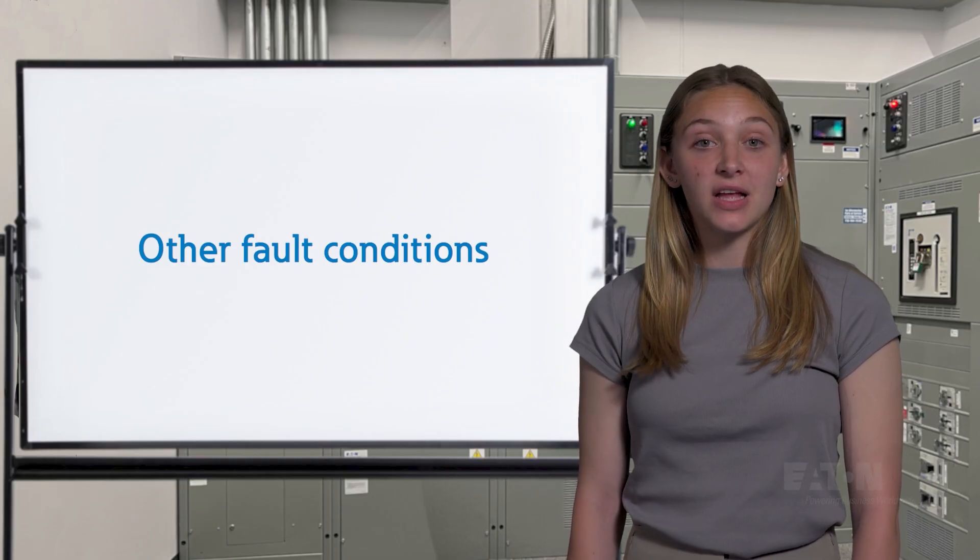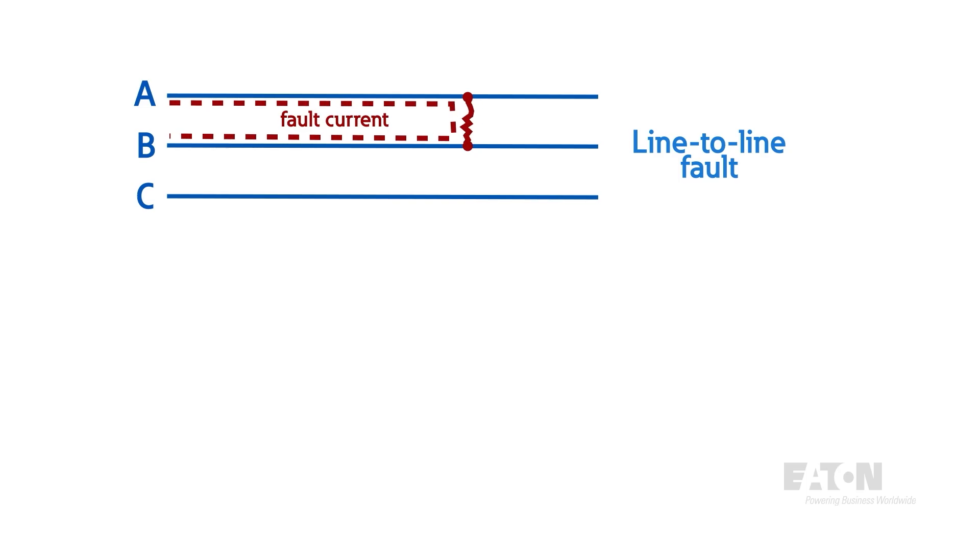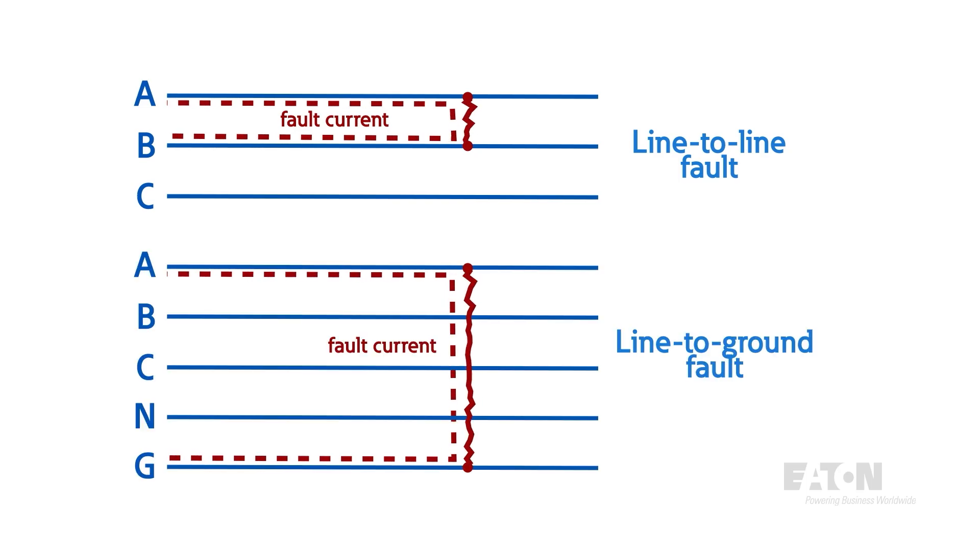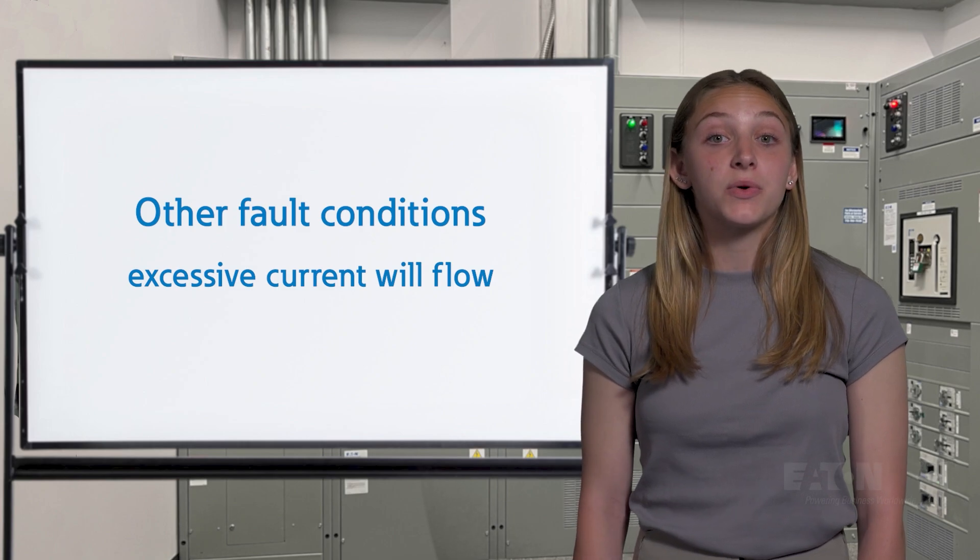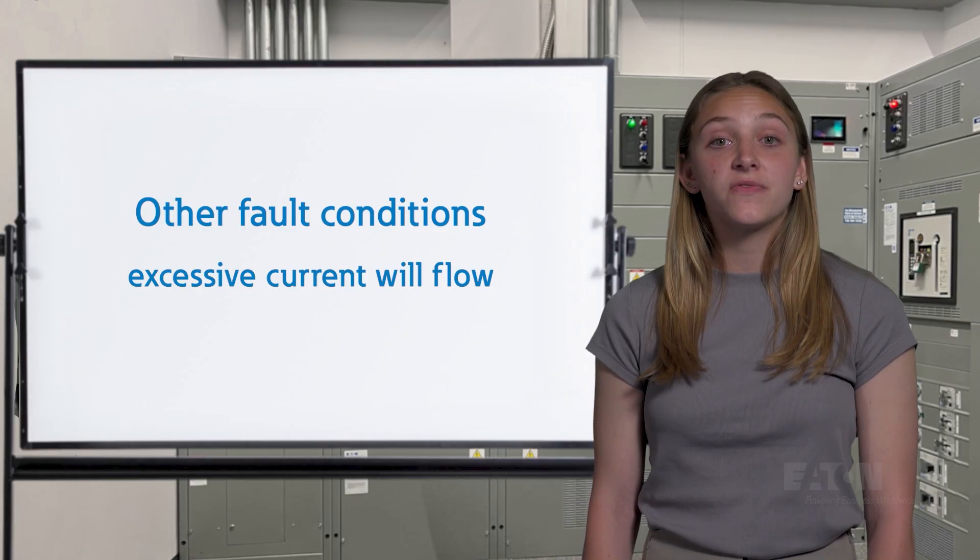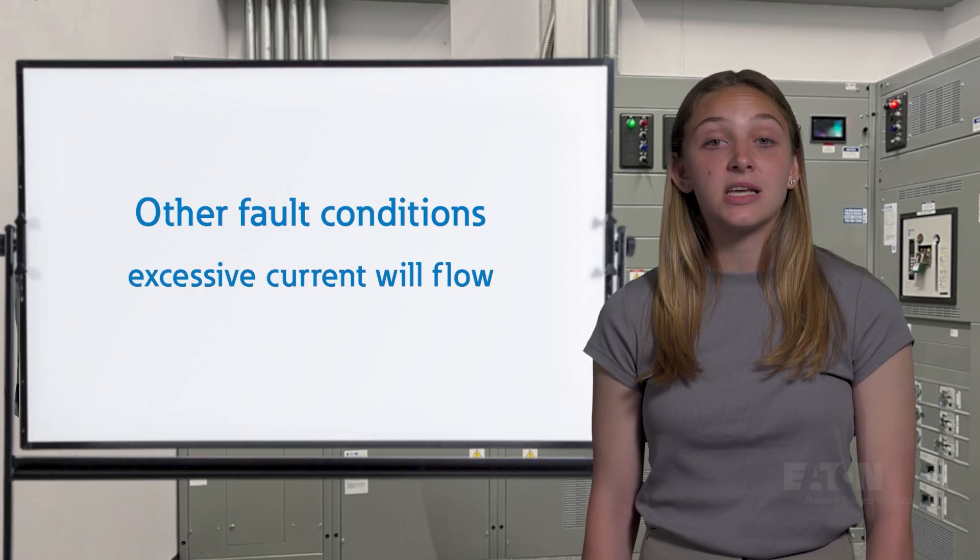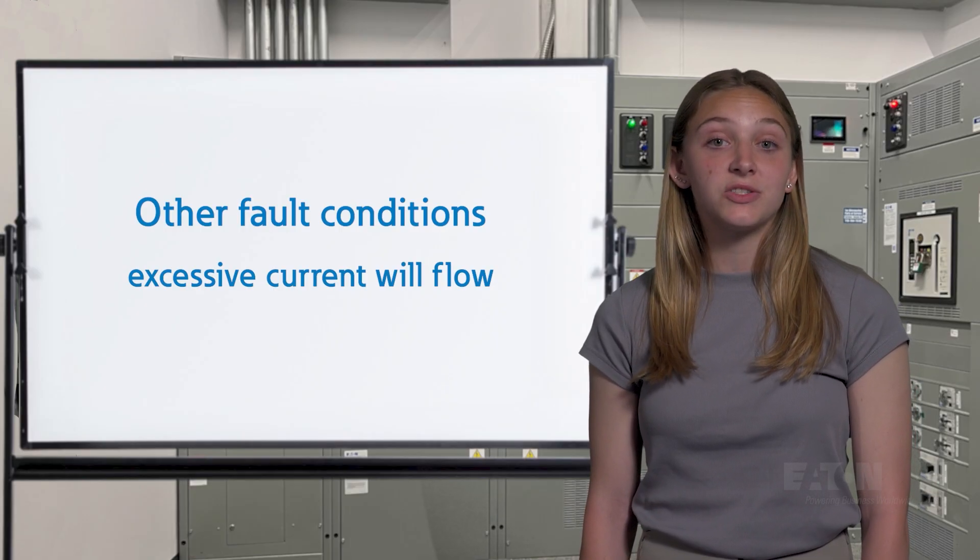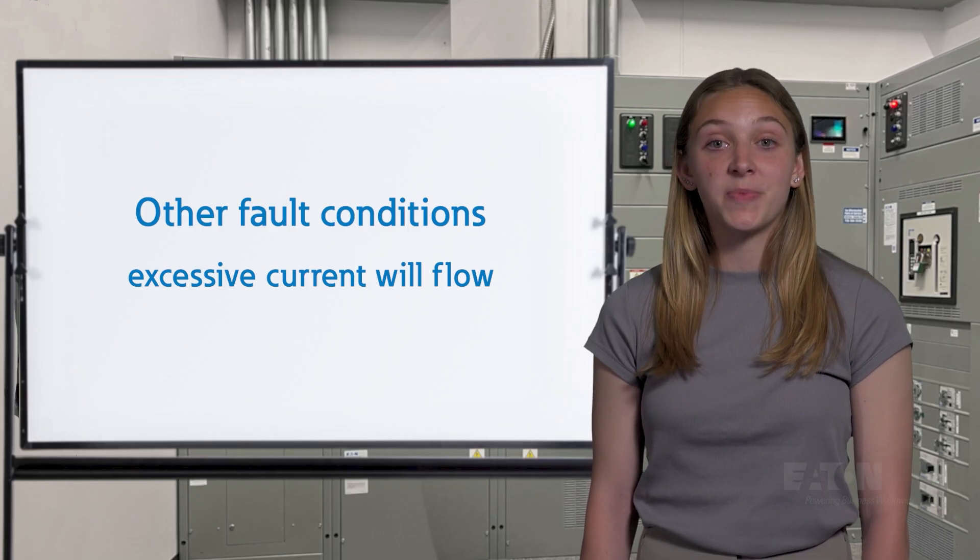We could follow a similar method for shorting events like line-to-line, line-to-ground, and so on. And they all share the same characteristic that way more current is going to flow than it's supposed to. However, doing these sorts of fault calculations gives us an idea of the magnitude of the worst-case situation and therefore how to prepare for it.